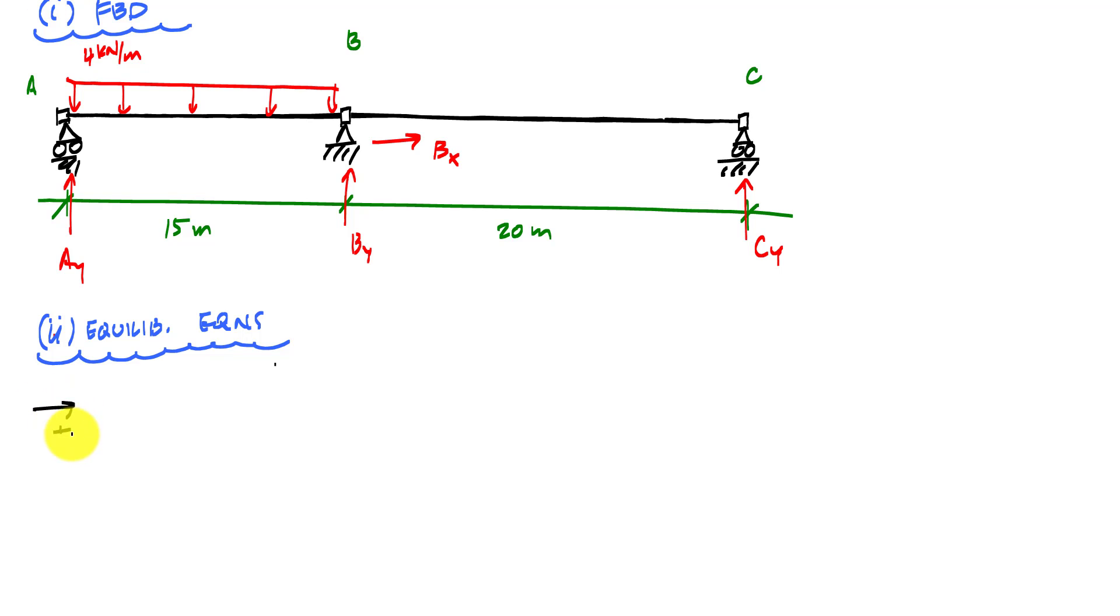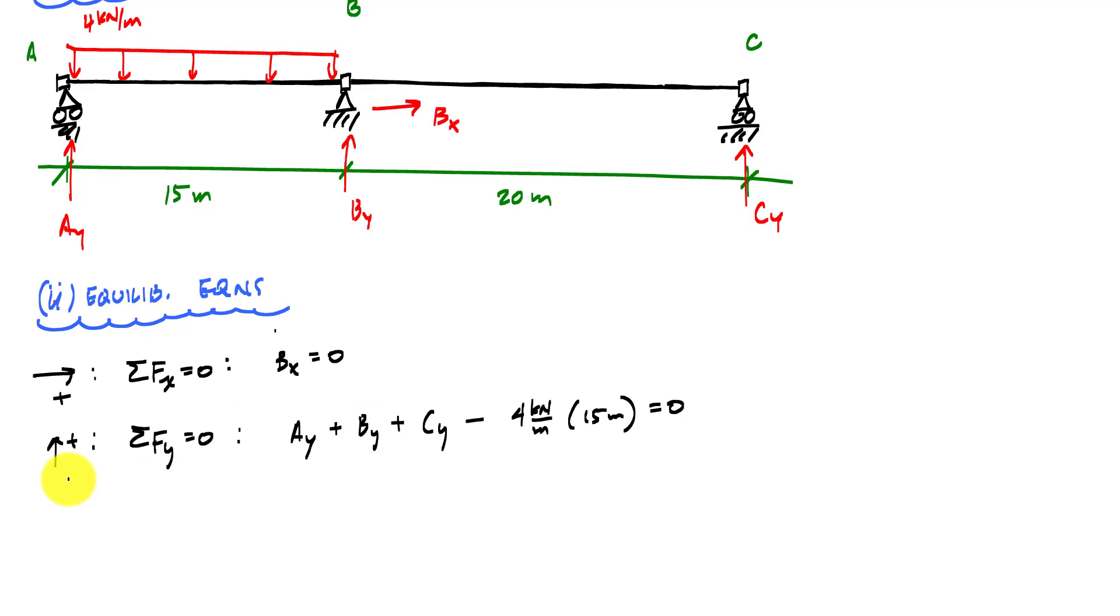If I take sum of the forces in the horizontal, I would get that Bx is 0. Take sum of the forces in the vertical. I could take moments about any point that I want. So if I take sum of the moments about point B, negative Ay times 15 meters plus 60 kilonewtons times 7.5 meters plus Cy times 20 meters equal to zero. I have two equations and one, two, three unknowns, which tells me that I have one degree of indeterminacy.